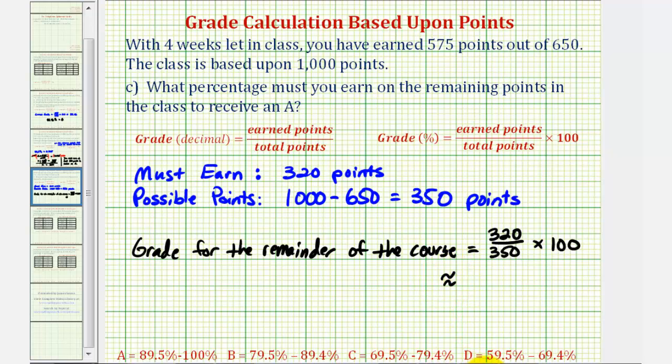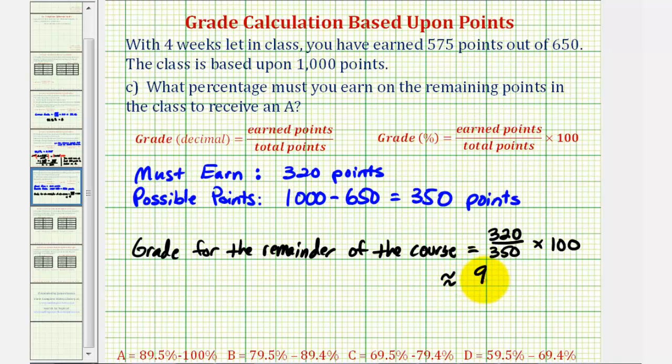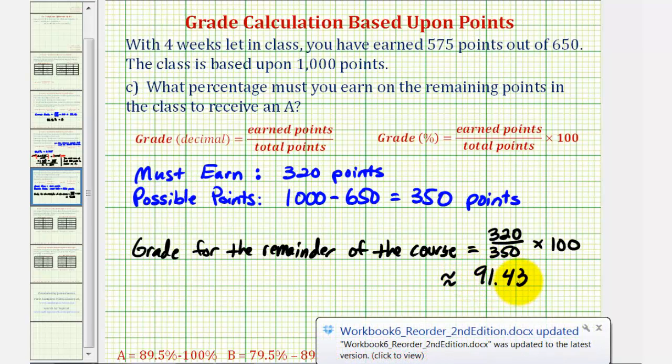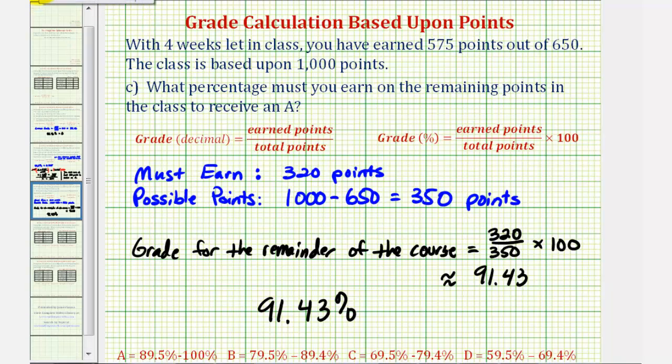Let's go back to the calculator one more time. 320 divided by 350. There's the decimal value times 100. So it's approximately 91.43. Which means you must earn approximately 91.43% for the remainder of the semester in order to earn an A in the course.